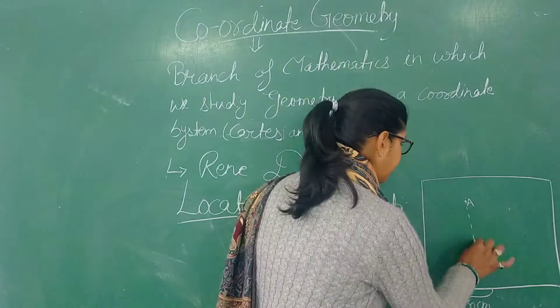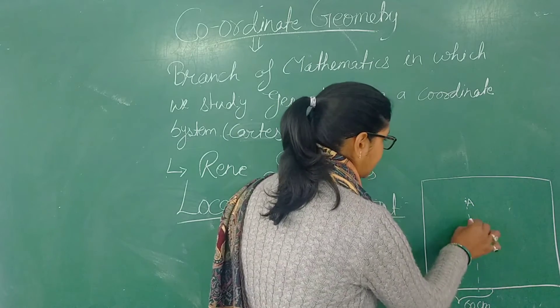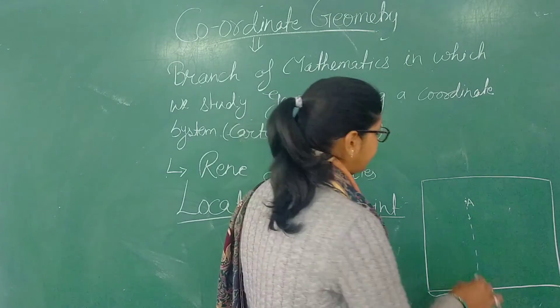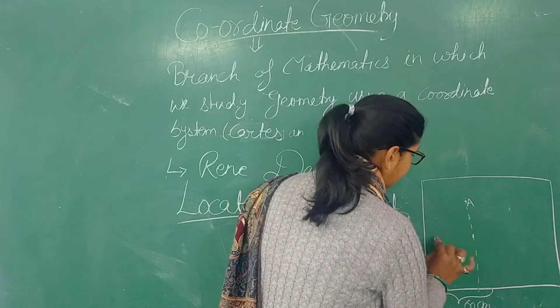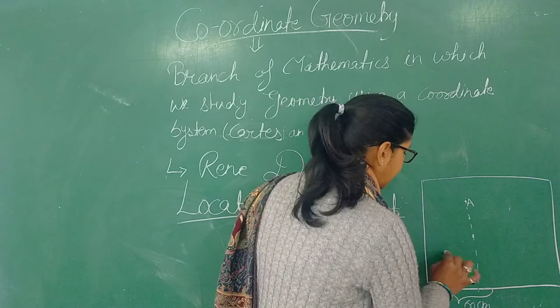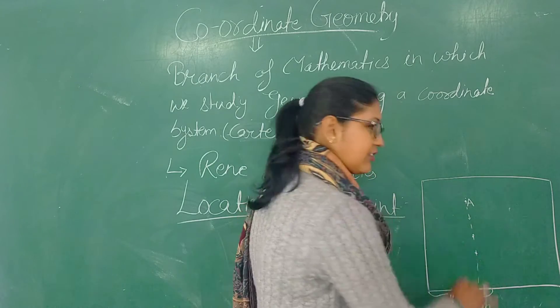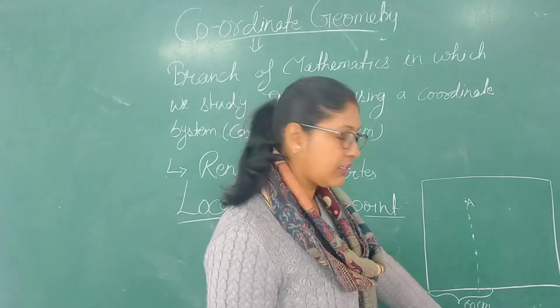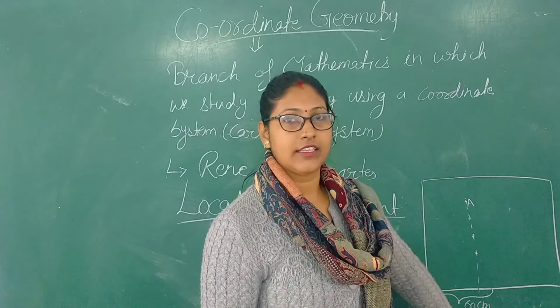Because when we add this line, it is also far away 60 cm. This point is also far away 60 cm. This point is also far away 60 cm. So the point A is not fixed when we have only 60 cm length given.